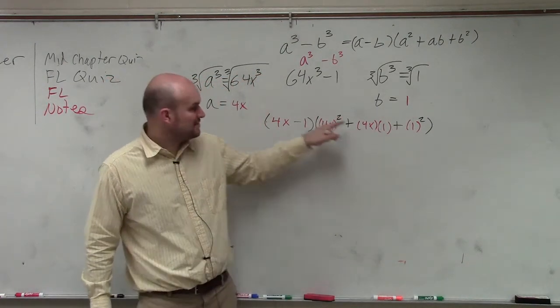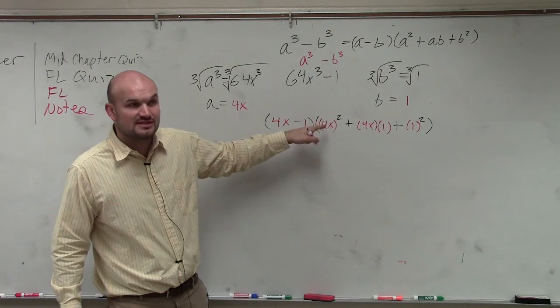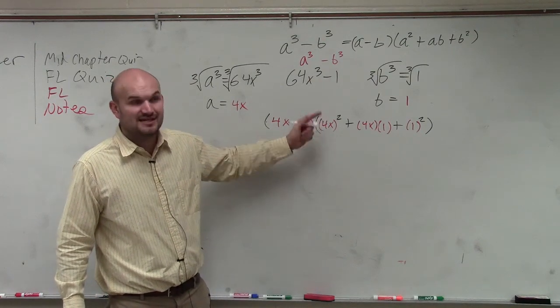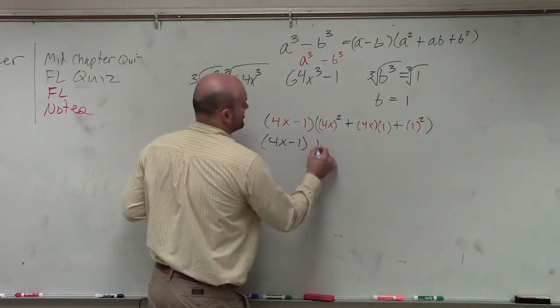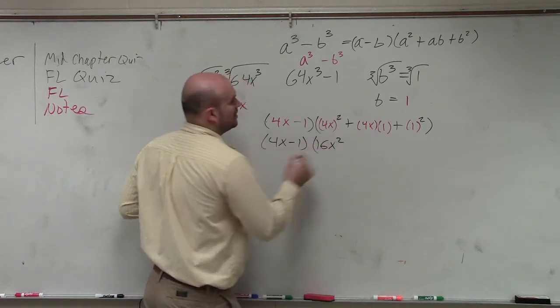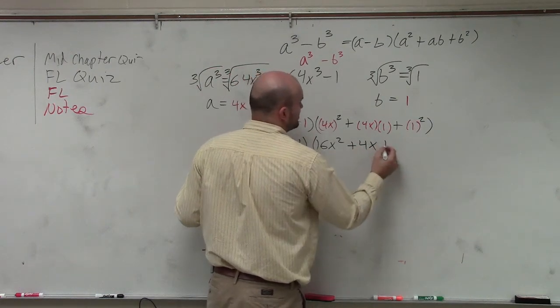Well, I put these all in parentheses because we are squaring this. So 4x squared is 4x times 4x, 4 times 4 is 16, x times x is x squared. So your final factored form would have been 16x squared. 4x times 1 is just 4x, 1 squared is just 1.